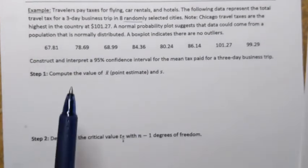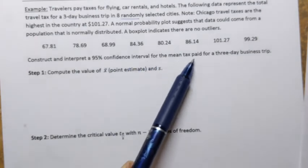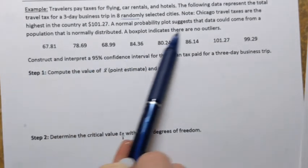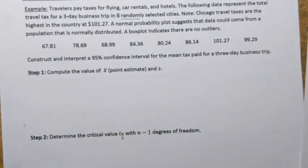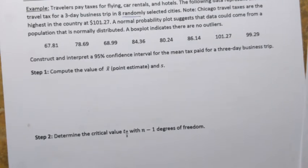The question asks us to construct and interpret a 95% confidence interval for the mean tax paid for a three-day business trip. We have sample information, but what is the population mean — the average tax for a three-day business trip across the United States? We'll never find the exact value, but we can obtain an interval such that we are 95% confident it contains the population mean.